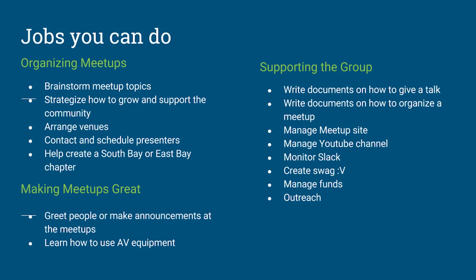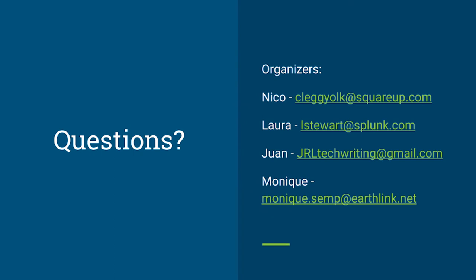I have a slide with a huge list of stuff you can do, and the link to slides is on the meetup page. The whole point of that list is there's a bunch of things you can do, and you can choose what fits your skill set. Or if it's not in your skill set yet and you want to get better at it, you can pick it anyway. If you have any questions, you can email me, Nico, or Laura, or Juan, or Monique. I'll put the sign-up sheet on this chair, so if you feel like signing up, come to this chair after all the talks.